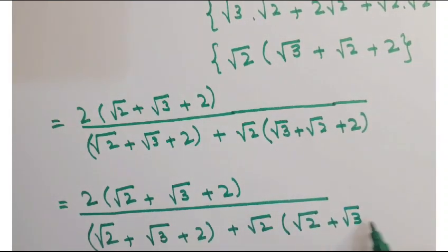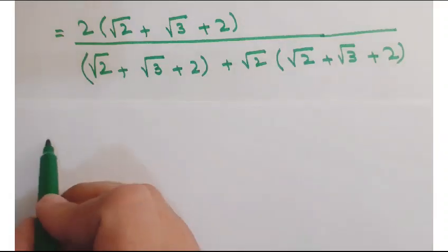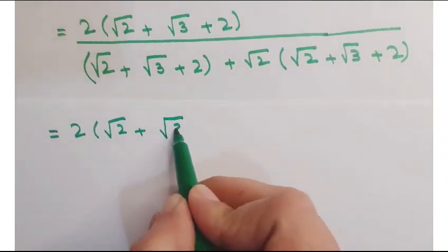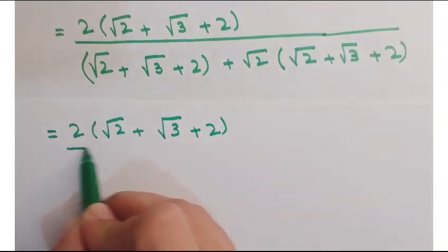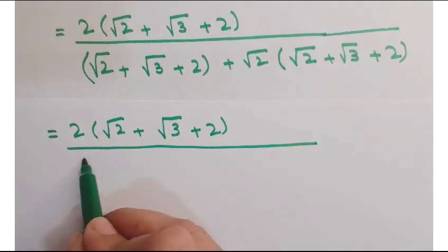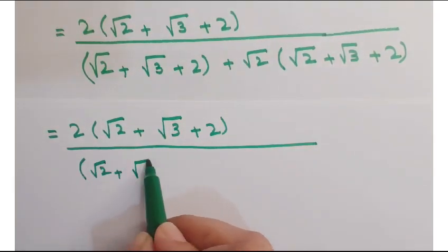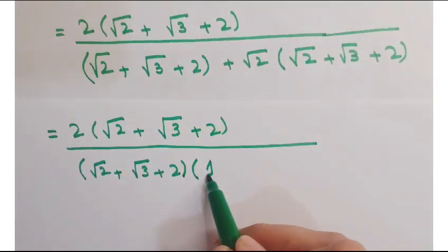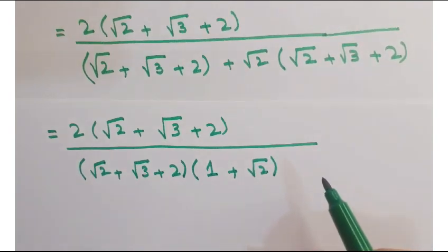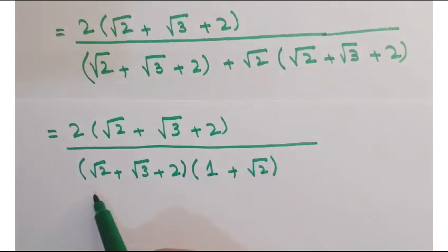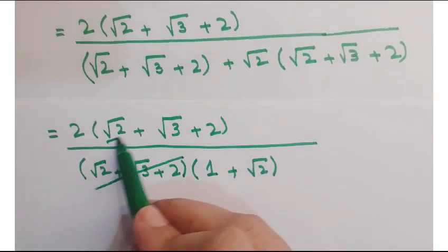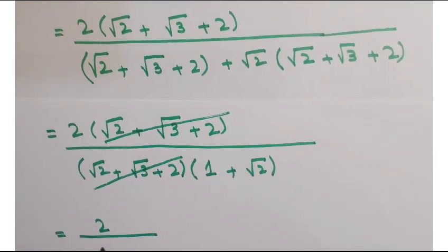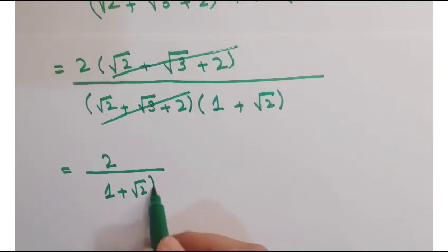Copy the numerator as it is. In the denominator, take out (√2 + √3 + 2) common, so you are left with (1 + √2) in the denominator. These common factors cancel out, leaving 2 upon (1 + √2).